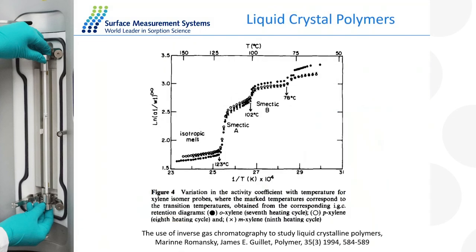Here's a more complicated material — a liquid crystalline polymer. Starting from the right and increasing temperature to the left, this very complex polymer has more than one phase transition — three or four transitions. As we go to different temperatures we can see a range of different events: one, two, three different events occurring. So not only can you see the Tg of a single component material, but if you have a polymer with more than one phase you may see evidence for more than one Tg. In this case, the probe molecule was xylene, and we see evidence for more than one transition event through different liquid crystal polymer phases.